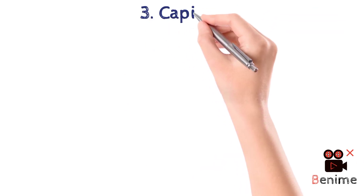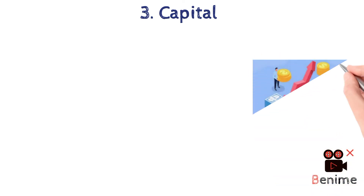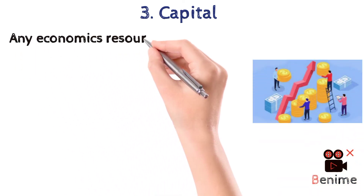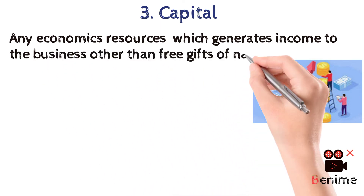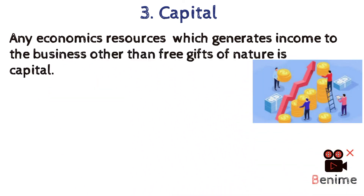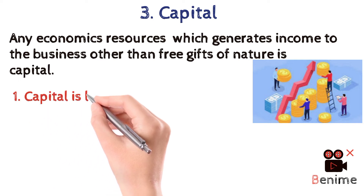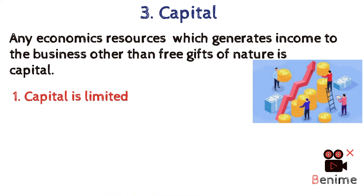Now let us discuss our third factor of production, that is capital. In simple words, any economic resource which generates income to the business other than free gifts of nature is capital. Capital includes money, properties, or any assets owned by the business. Now let us see some of its features. Number one: capital is limited, meaning our money or any asset is always limited.